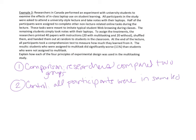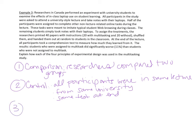Other controlled variables include that all students were from the same university, and they were all given the same test at the end — which is really important when evaluating people. For random assignment, the researchers printed out 40 papers, shuffled them, and handed them out to random students. That is a great example of random assignment.